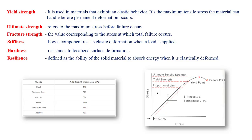These are a few terminologies: yield strength, ultimate strength, fracture strength, stiffness, hardness, and resilience. When it comes to yield strength, this is the maximum stress the material can handle before permanent deformation. For glass steel the strength is 448 MPa, for stainless steel it is 520 MPa. Up to this stress it stays in the elastic region and won't undergo plastic deformation.